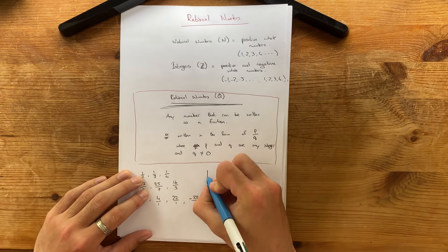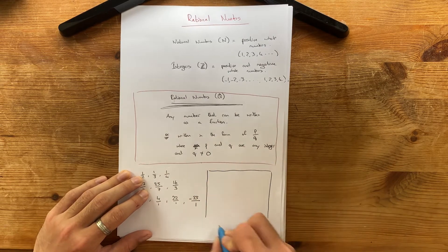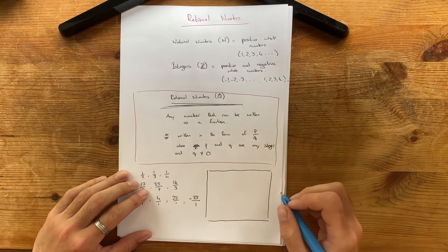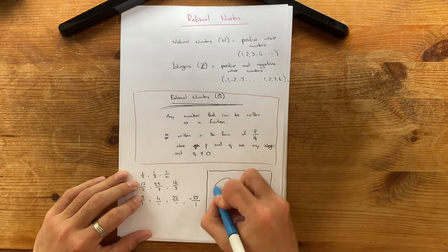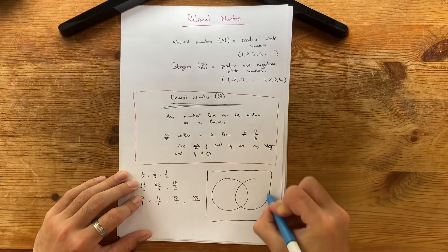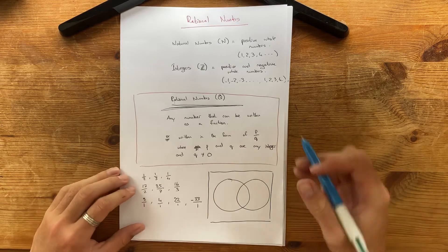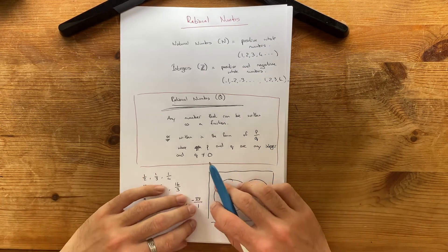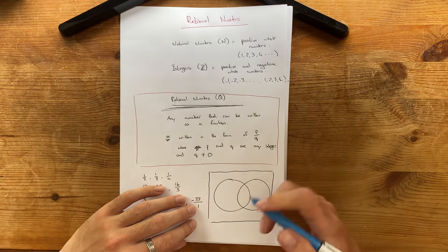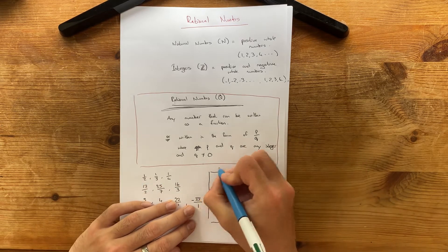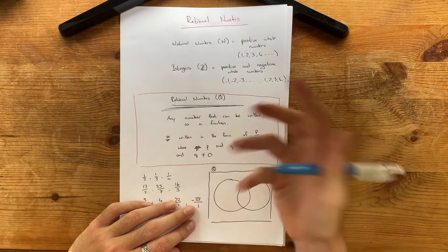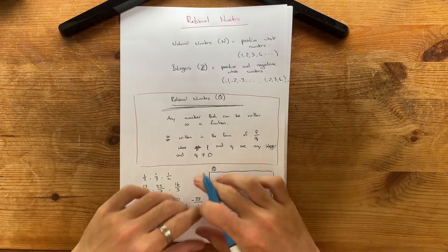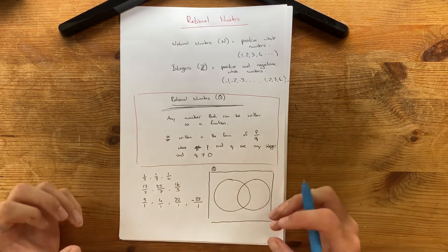So, I always like to think back to when we talked about sets and talk about the sets of numbers that we have learned about so far. So, rational numbers, I always think of as being the parent group. So, the parent group is rational numbers. And I'm going to just label it Q, because that's what rational numbers are. Everything inside of this box is going to be a rational number.